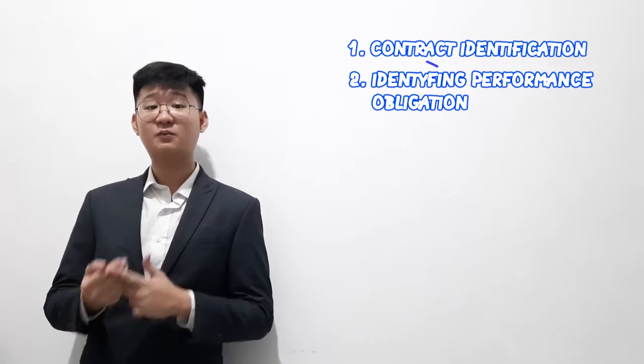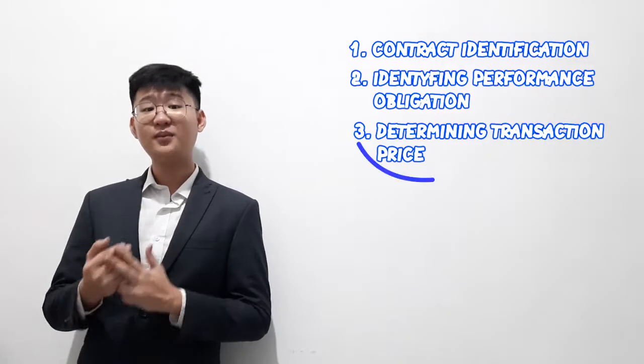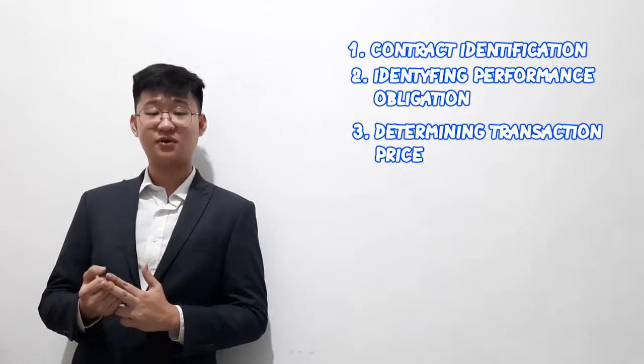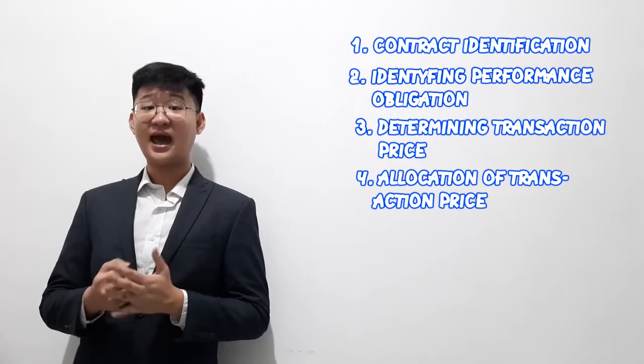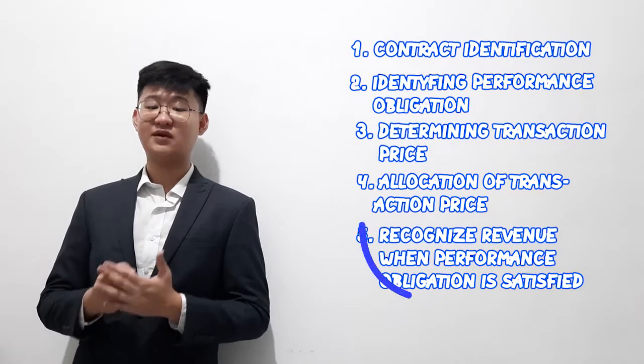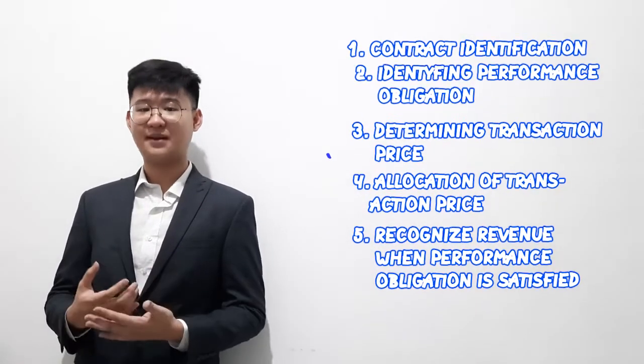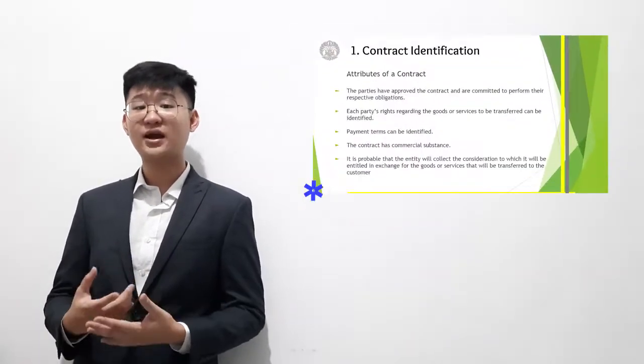Beginning with the overview of IFRS 15, revenue recognition itself is made up of five steps: contract identification, identification of the performance obligation, determining the transaction price, allocating the transaction price, and recognizing revenue. We're going to start with the first step, which is contract identification.